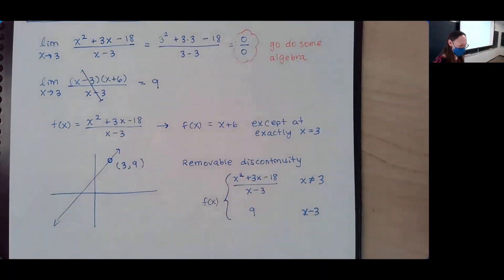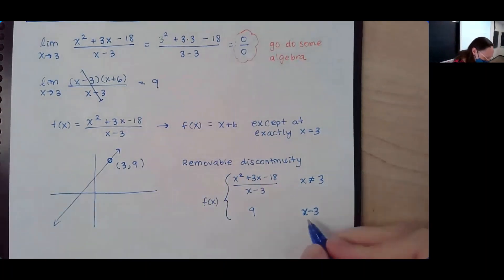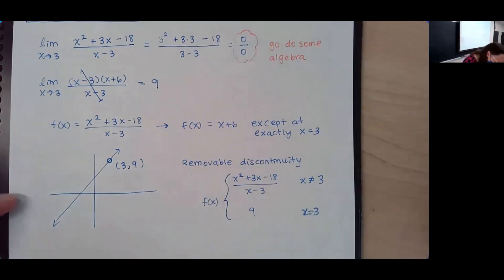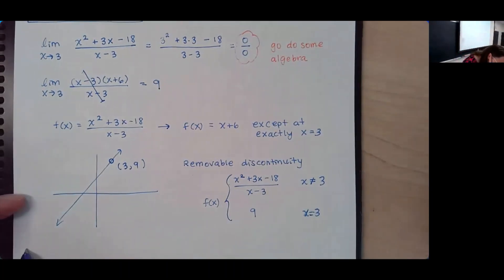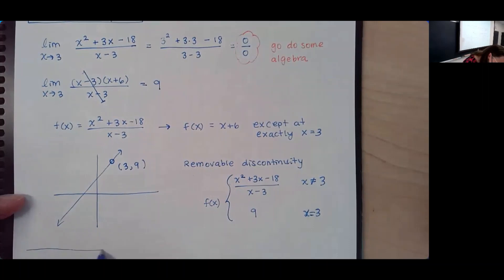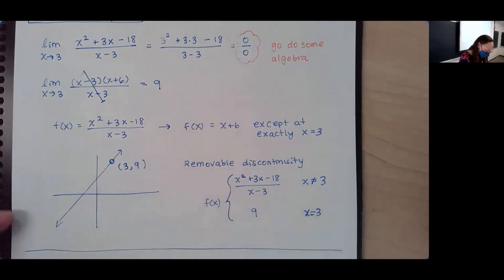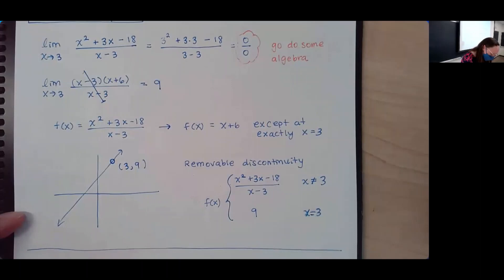So it's just algebra — limits with algebra. That's what we're doing. Let's talk about some of the other kinds of algebra that are going to show up for us. We're going to come back to limits at infinity, I promise.